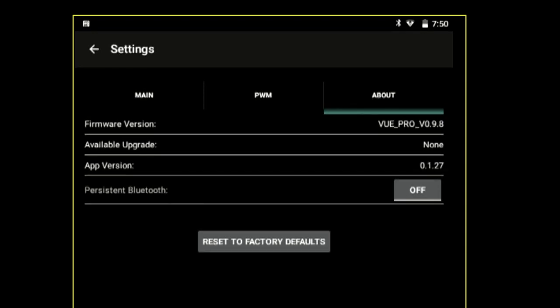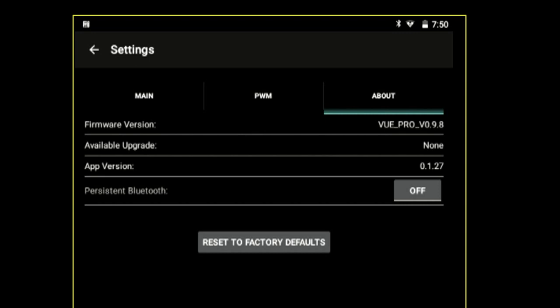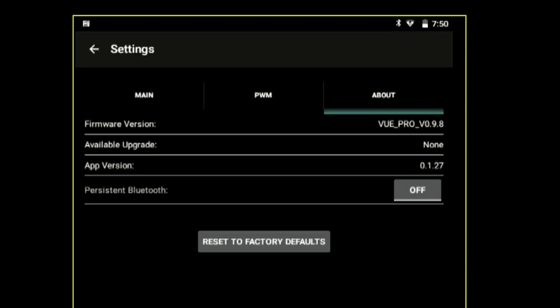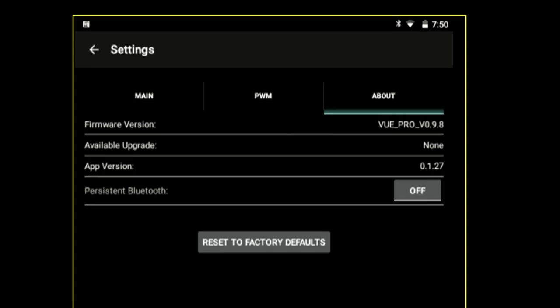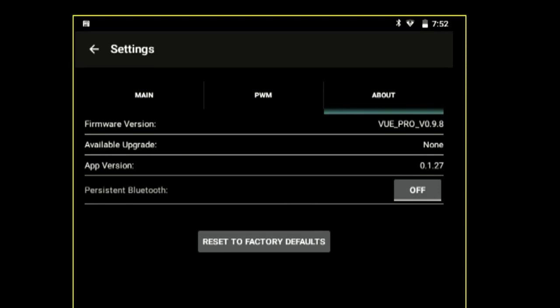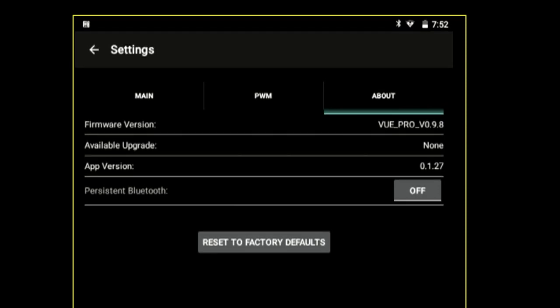Our final page, the about page, shows our current firmware version, our app version. If there's a firmware upgrade available, it'll display here. You can turn persistent bluetooth on. That's important if you're going to be using it. Let's say not on an aircraft, it'll leave the bluetooth functional so you can get into it. Normally it turns off after about two minutes of inactivity. Also reset to factory defaults. If you've messed something up, want to change it back, hit that button, you're good to go. A new version of the app will soon be released that will include additional features like region of interest.